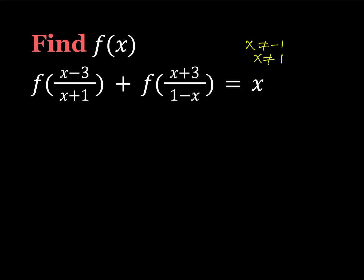For that purpose, I'm going to replace this expression here with y. After I do this, obviously the first parenthesis is going to be y, and then I'm going to find x in terms of y, and then I'll replace the x in the second part with that expression so that I can write the whole thing in terms of y. So I have x minus 3 over x plus 1 equals y.